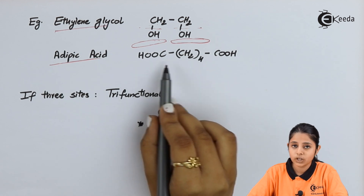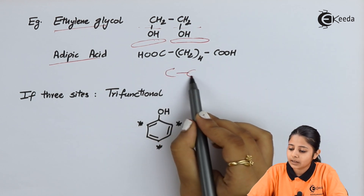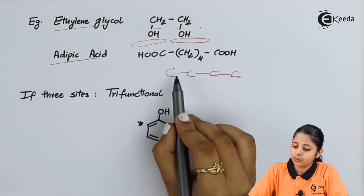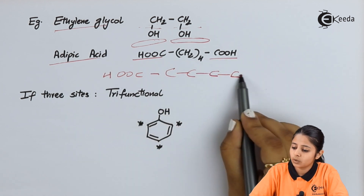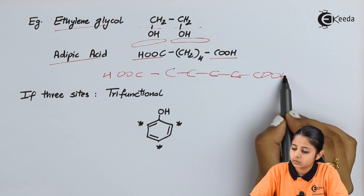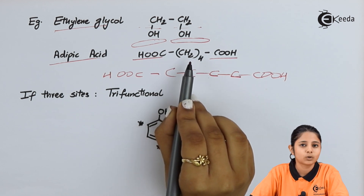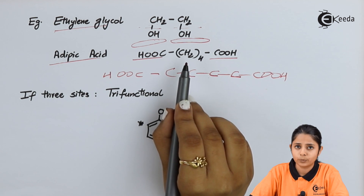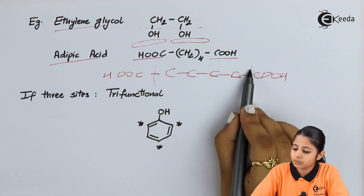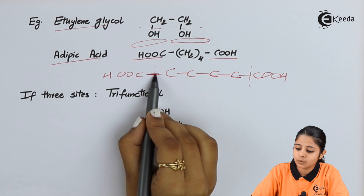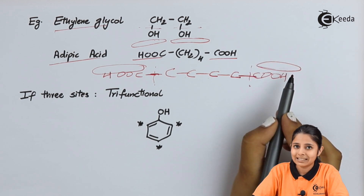Similarly, adipic acid has the structure HOOC-(CH₂)₄-COOH. The C-C and C-H bonds are strong and cannot be broken, but the carboxylic acid groups (-COOH) at both ends can be broken. When each carboxylic group breaks, something can attach at that position, giving adipic acid two reactive sites and making it bifunctional as well.